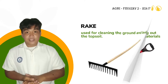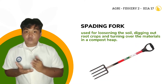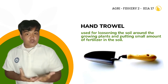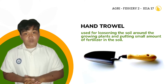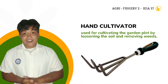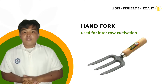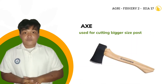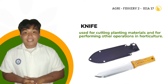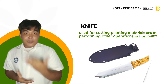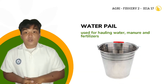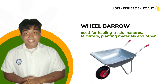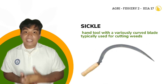Spading Fork — used for loosening the soil, digging out root crops, and turning over the materials in compost heap. Light Hoe — used for loosening and leveling soil and digging out furrows for planting. Hand Trowel — used for loosening the soil around the growing plants and putting small amounts of fertilizer in the soil. Hand Cultivator — used in cultivating the garden plot by loosening soil and removing weeds. Hand Fork — used for inter-row cultivation. Pruning Shears — used for cutting branches of planting materials and unnecessary branches of plants. Axe — used for cutting bigger size posts. Knife — used for cutting planting materials and performing other operations in horticulture. Sprinkler — used for watering seedlings and young plants. Water Pail — used for holding water, manure, and fertilizer. Sprayer — used for spraying. Wheelbarrow — used for holding trash, manures, fertilizer, planting materials, and others. Sickle — a hand tool with a variously curved blade typically used for cutting weeds.